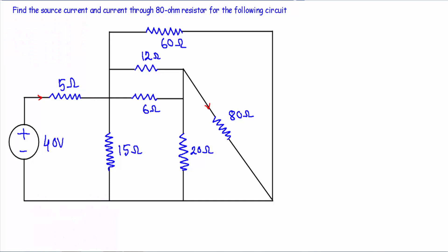In this video I will show you how to solve a complex series-parallel circuit to find the current through a resistor inside that complex structure. In the circuit I have to find the source current and the current through the 80 ohm resistor. The circuit is looking complicated, so first I will simplify it.